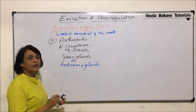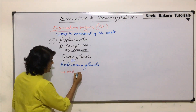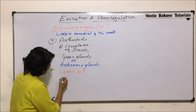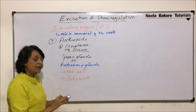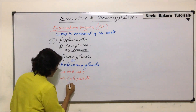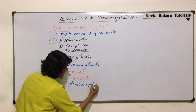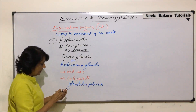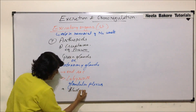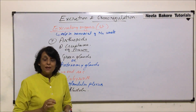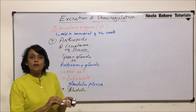Each antennal gland or green gland comprises three main parts: the end sac, a labyrinth (also known as the glandular plexus), and the third part is a bladder. There is also one more structure known as the renal sac. So let us draw the structure.